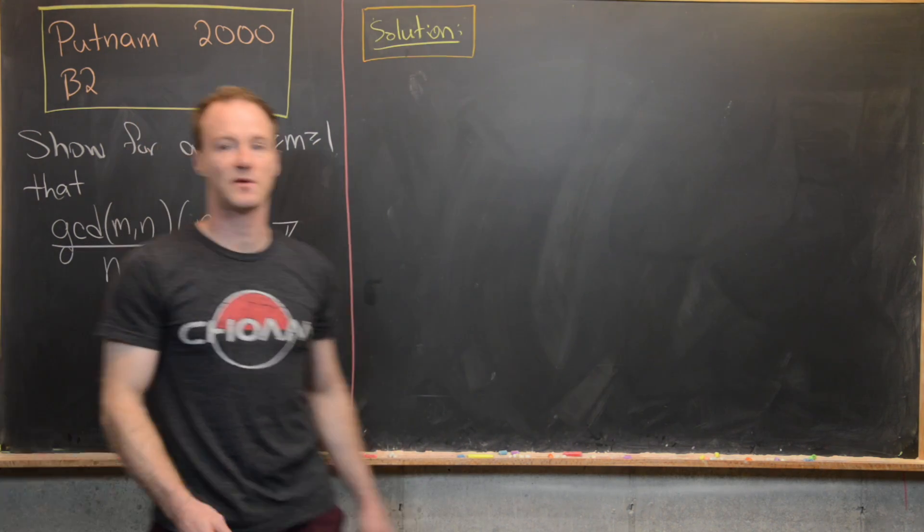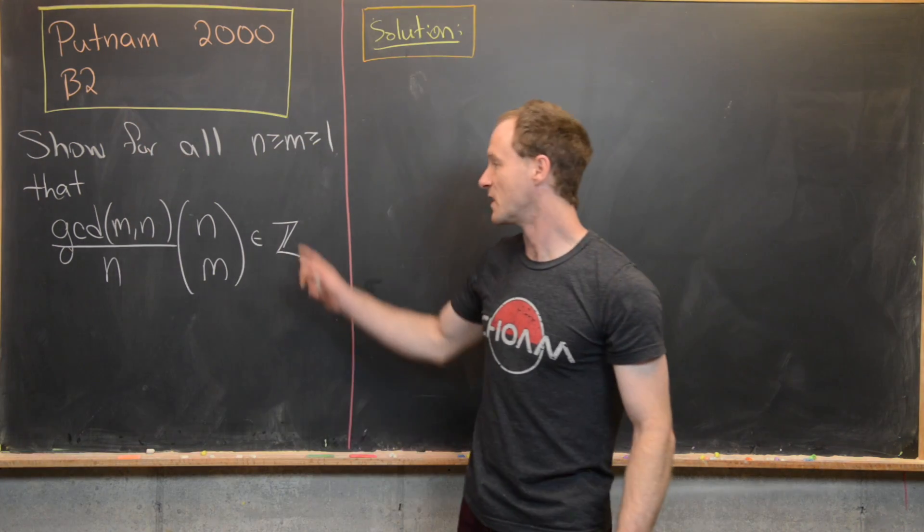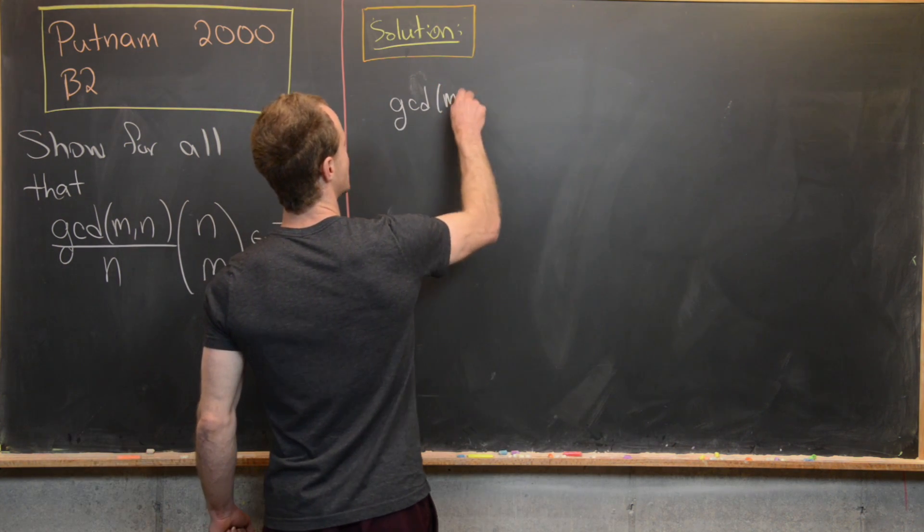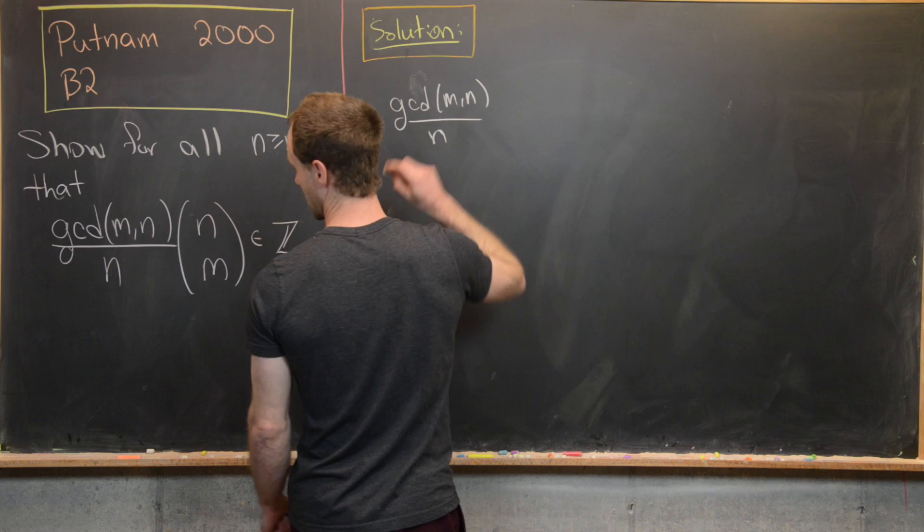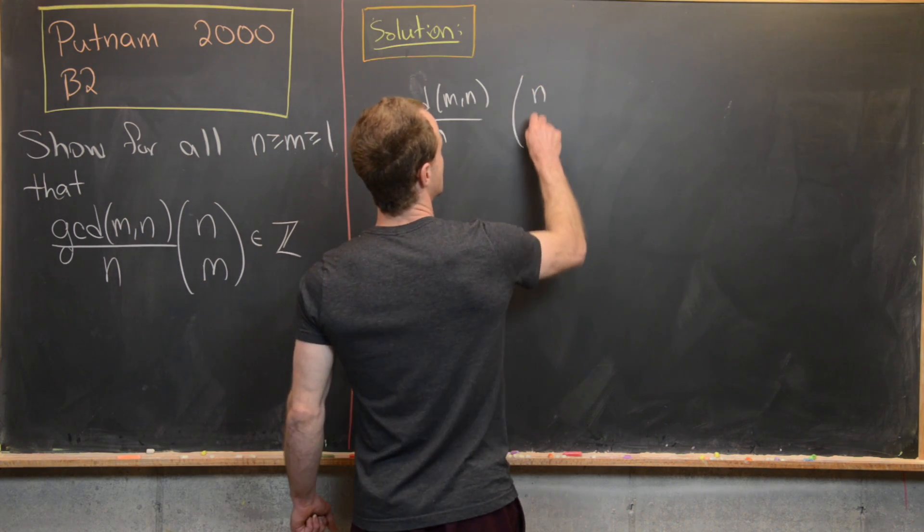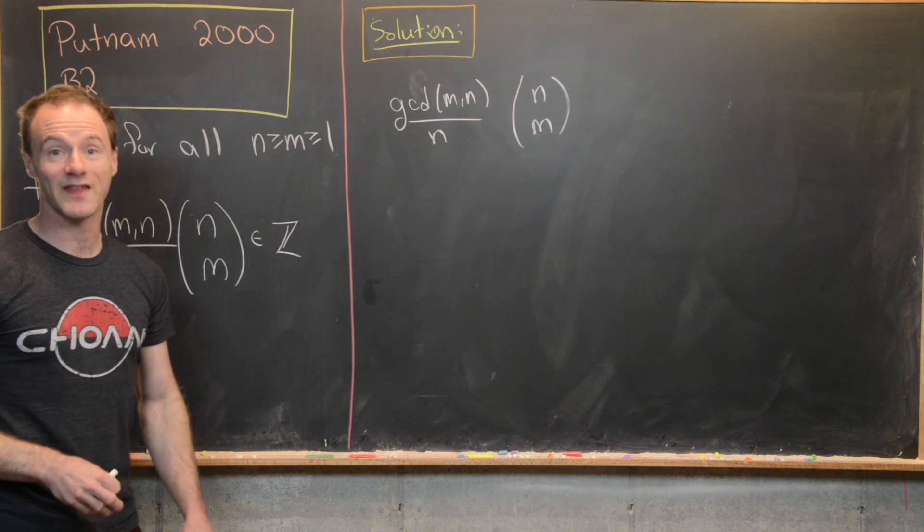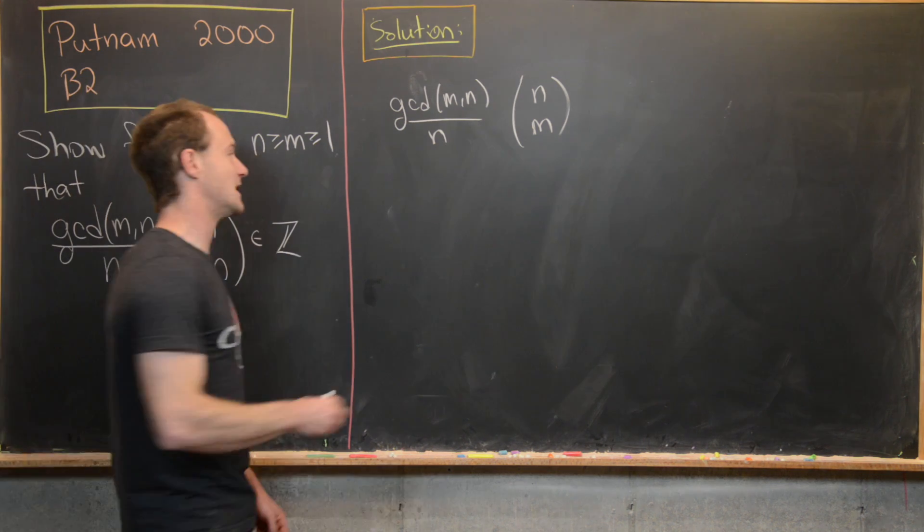Hopefully that hint was helpful. Now we're ready to look at a solution. So let's go ahead and take this term right here. We have gcd(m,n)/n × (n choose m). And now what we want to do is apply the hint. In other words, apply Bezout's identity.